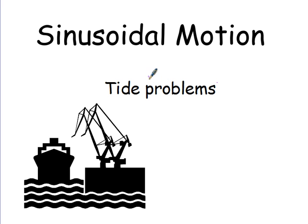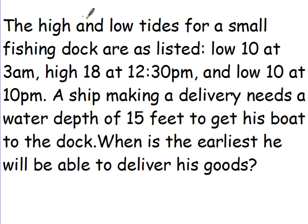Here's a bunch of problems about tides. Well, actually just one problem. Here's some information. The high and low tides for a small fishing dock are as listed: a low of 10 feet at 3am, a high of 18 feet at 12:30pm, and a low of 10 feet at 10pm. There's all your information right there.